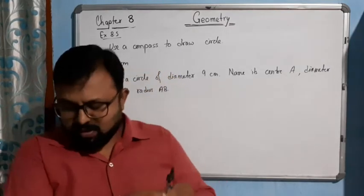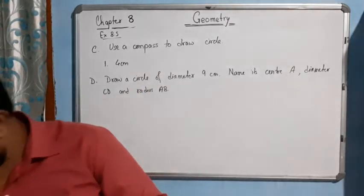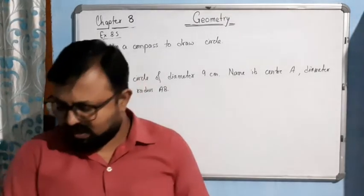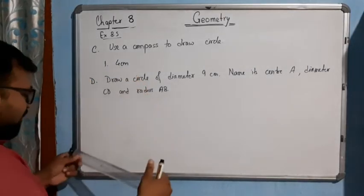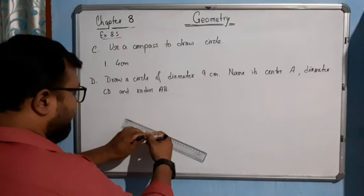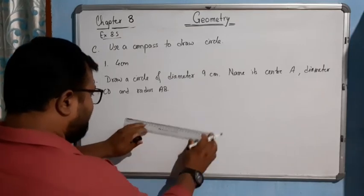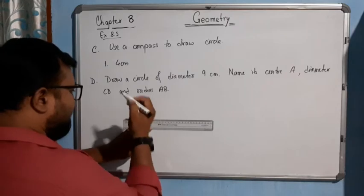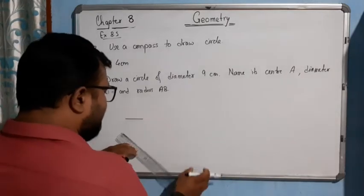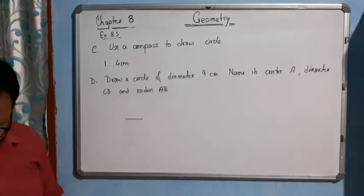Now what you will do, with the help of your scale, what you will do? 4 centimeters is there, so you will draw a line. Suppose here in this case, in this board I will try to draw 4 centimeter. So this is the 4 centimeter line.